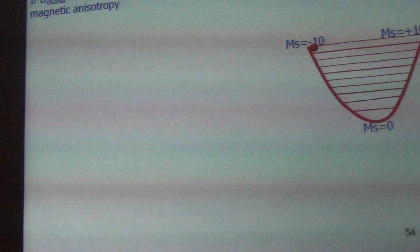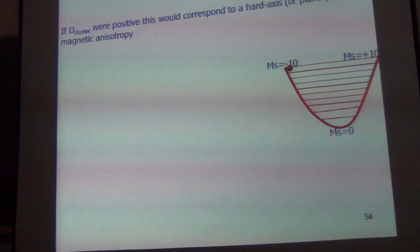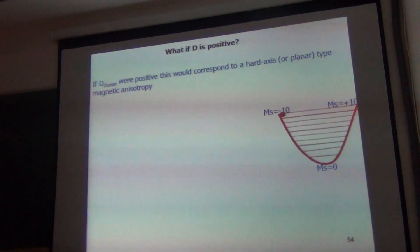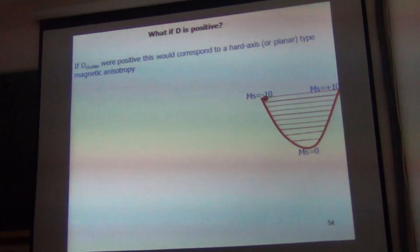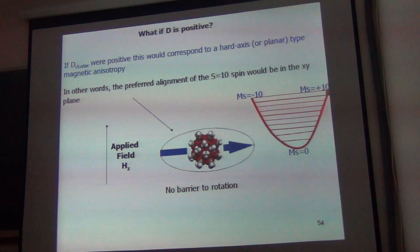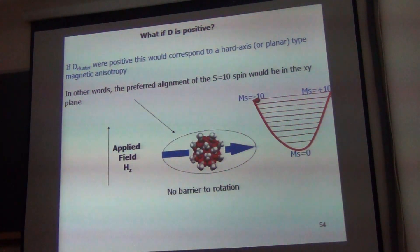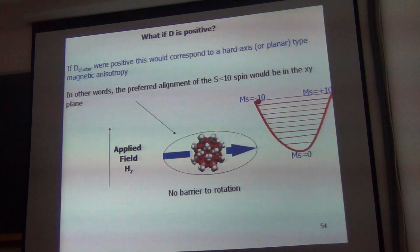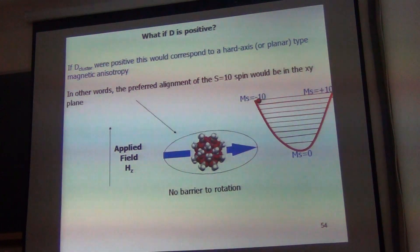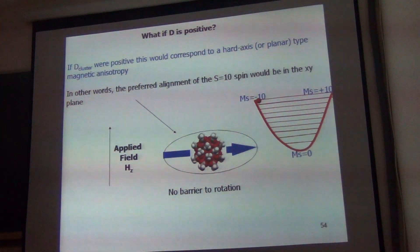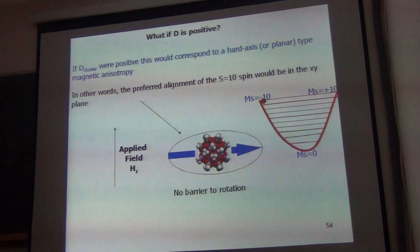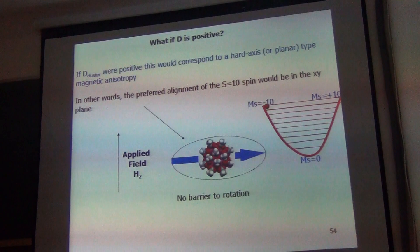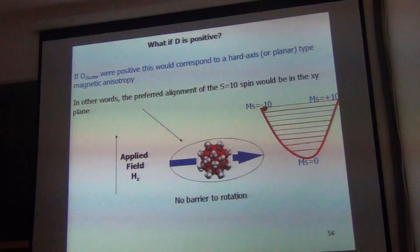What happens if D is positive? Well, if D is positive: minus 10 is there, the plus states are there, and MS equals zero is down. Now I don't have a barrier — I have a potential well shape. The electron can freely go between states. So, no barrier means no relaxation. It is all controlled by a delicate parameter — zero-field splitting, which is like a crystal field parameter controlled by the ligand strength and symmetry. You need to have a negative D and a large spin, then only you can have a nice, beautiful single molecule magnet.